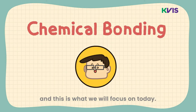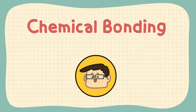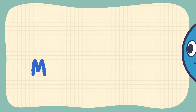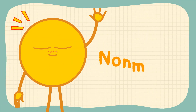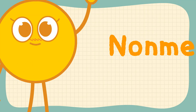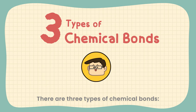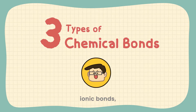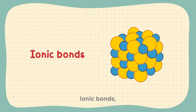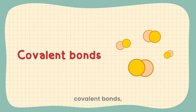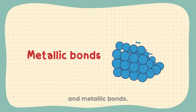And this is what we will focus on today. There are three types of chemical bonds: ionic bonds, covalent bonds, and metallic bonds.